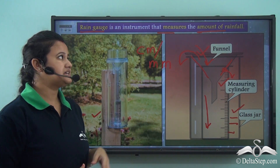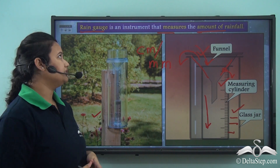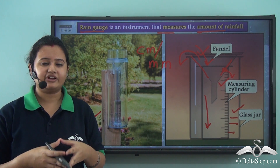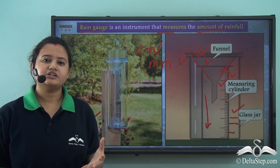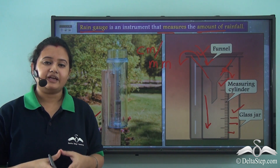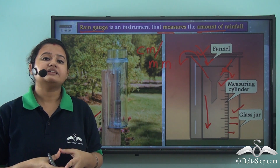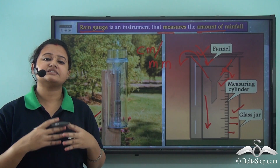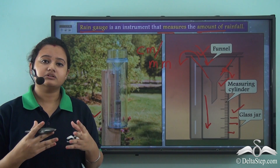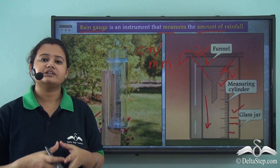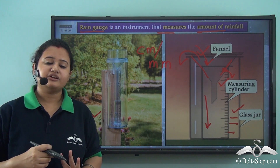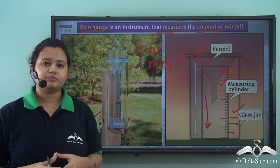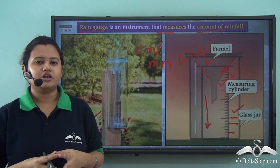The instrument that measures the amount of rainfall is a rain gauge. This brings us to the end of today's discussion on moisture and precipitation. We learned that humidity is the amount of water vapor present in air, which leads to cloud formation and rain. Precipitation is the process by which water comes down on the earth's surface as rain or snow. The three main types of rainfall are orographic, convectional, and cyclonic rainfall.